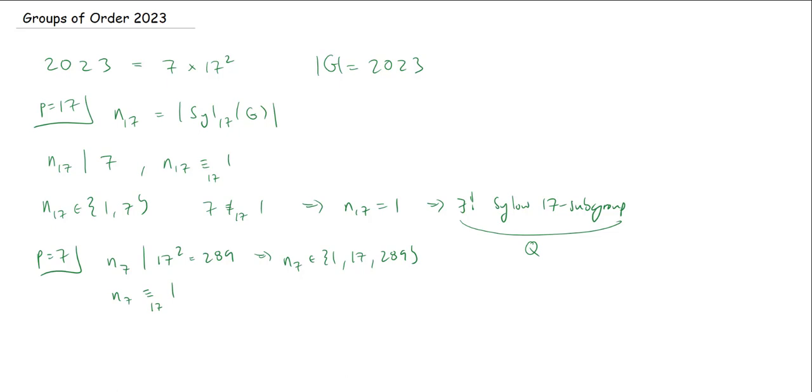Oh, I said mod 17, of course. We mean here mod 7. So let's see. 1 is definitely congruent to 1 mod 7. 17 is congruent to 3 mod 7.